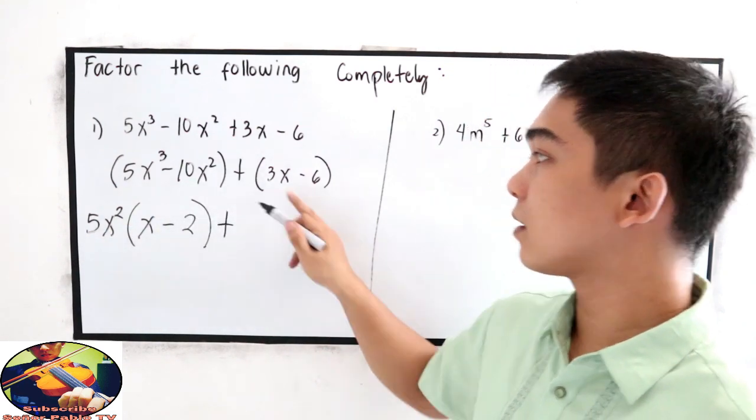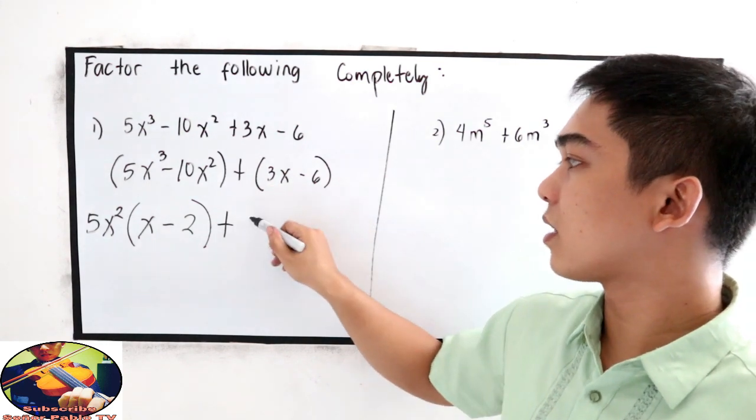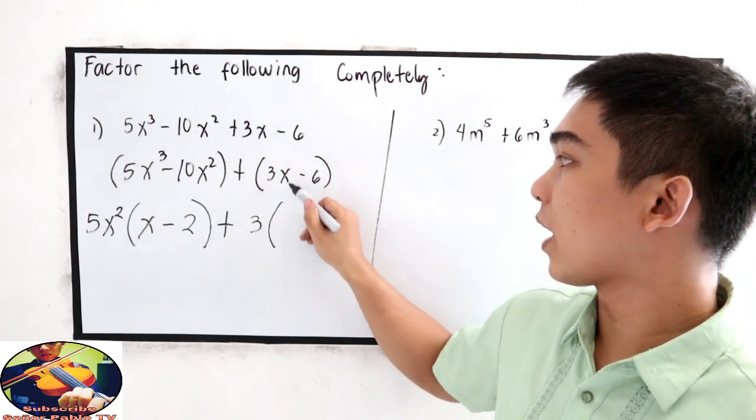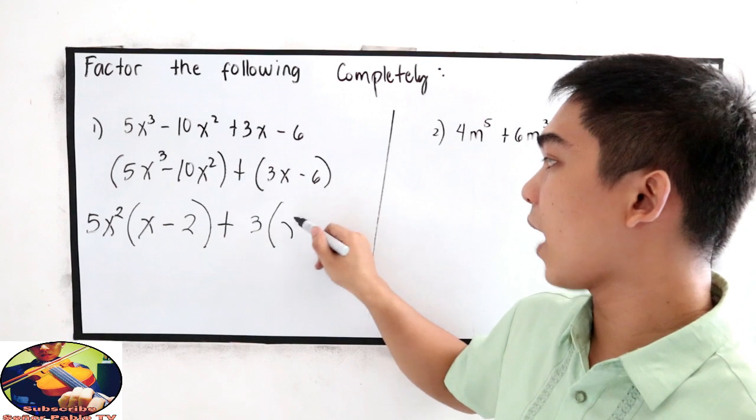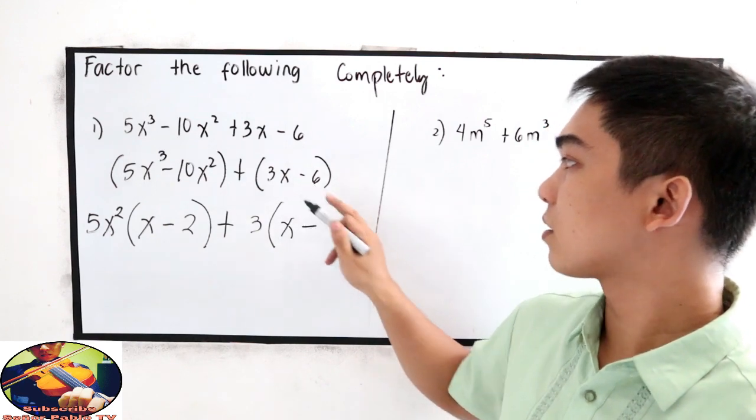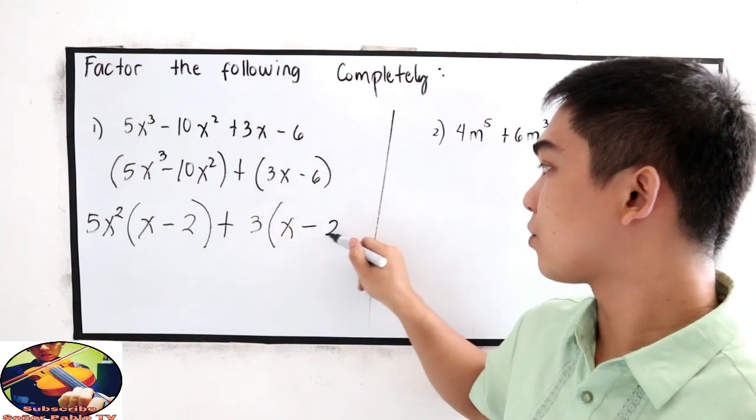Copy the sign plus, common factor is 3. 3x divided by 3, that is x. Minus 6 divided by 3, that is 2.